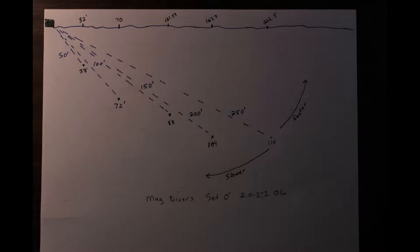This diagram shows the major numbers for a mag diver set at zero, going 2.0 to 2.2 over ground. So just an example, with 50 feet of line out, it'll be 32 feet back, 38 feet deep. With 100 feet out, it'll be 70 feet back, 72 feet deep. With 150 feet out, it'll be 121 feet back, 88 feet deep. So you get the idea.